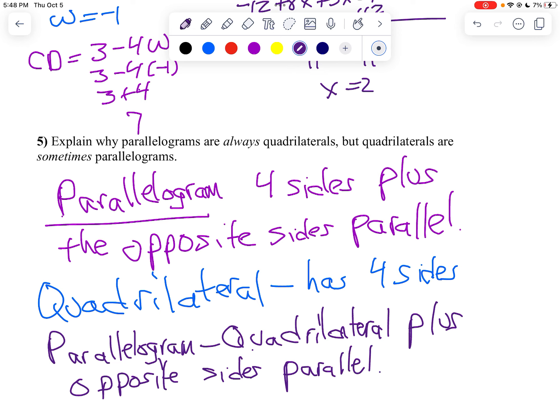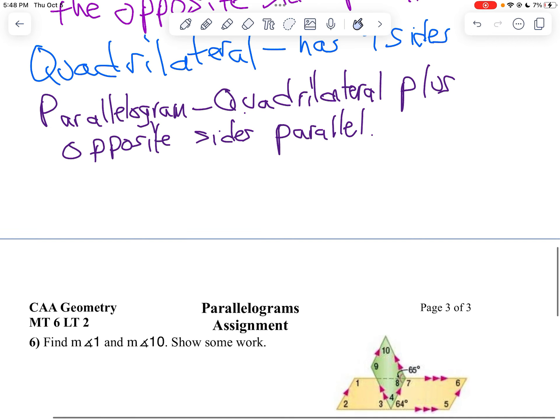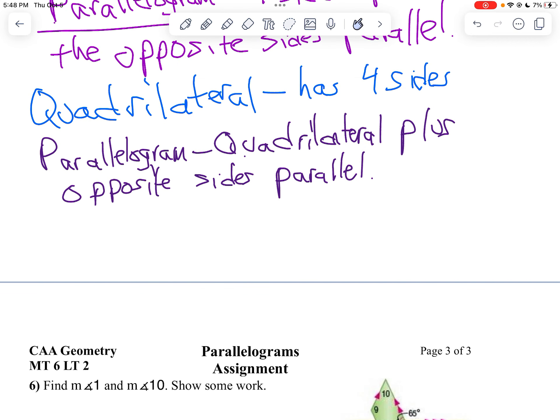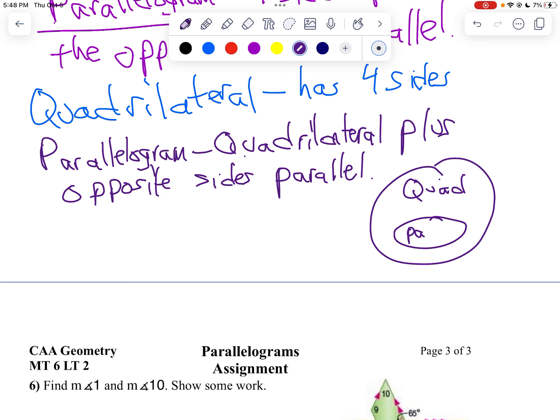So that's why we can say every parallelogram is a quadrilateral, but not every quadrilateral is a parallelogram. We can even represent that as kind of with a Venn diagram. Okay. So here is my set of quadrilaterals. And then inside here, we have a parallelogram.